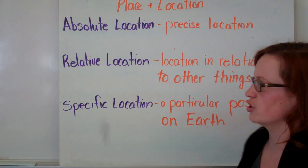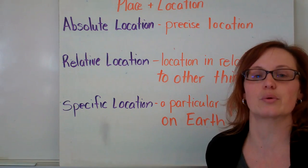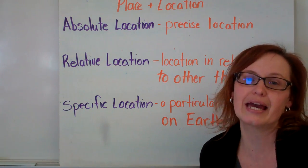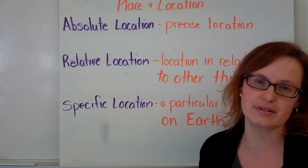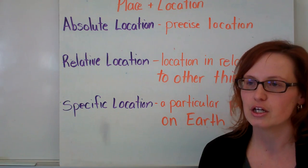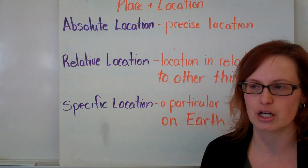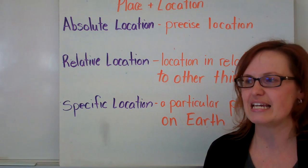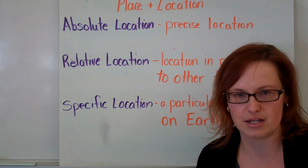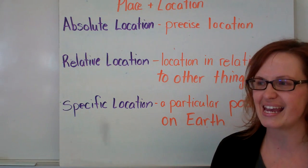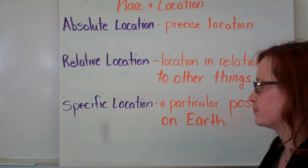Relative location. Relative location is your location in relation to the location of something else. So if you think about where your house is right now, you might be two kilometers from Aramels Town Center, or down the street from a gas station. It's your location in relation to something else.